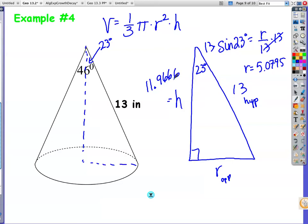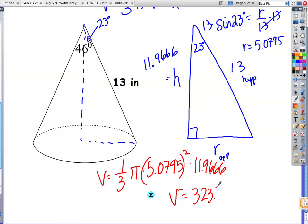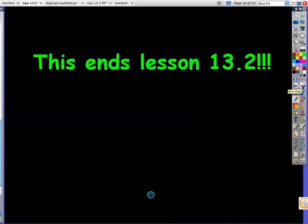Now I have to put all this together. 1/3 pi, radius 5.0795 squared, times my height which is 11.9666. If you put that all into your calculator, I'm getting a volume of 323.3, and then my label is inches cubed. And that is lesson 13.2.